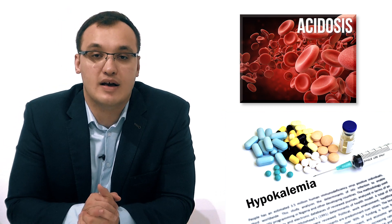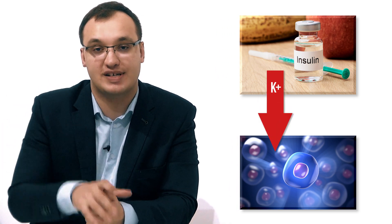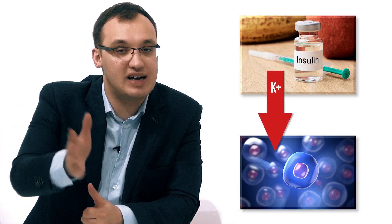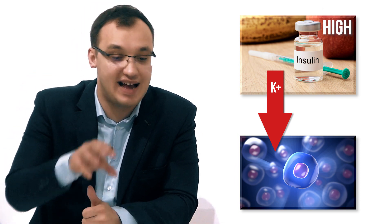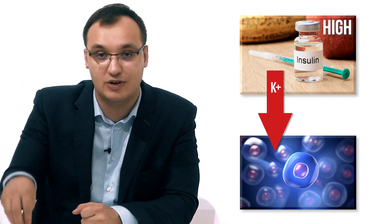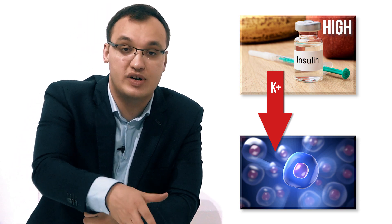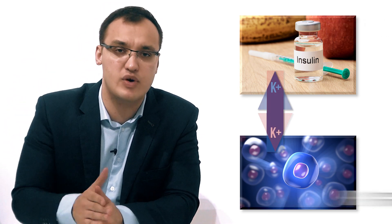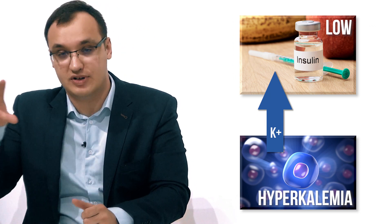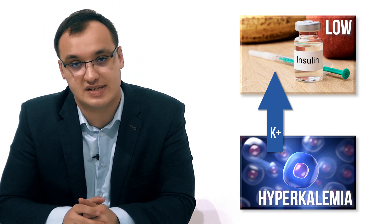Another exception is insulin. If you have increased insulin, it will tend to move potassium into the cells — so regardless of whether you have alkalosis or acidosis in your blood, a huge amount of insulin will move potassium into the cell, giving you hypokalemia. The opposite is also true: a very low amount of insulin will cause potassium to move out from the cell.